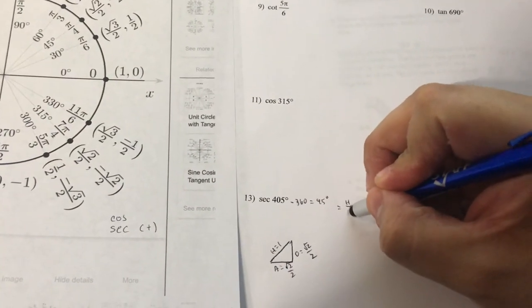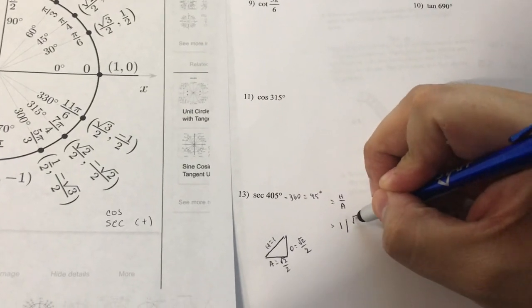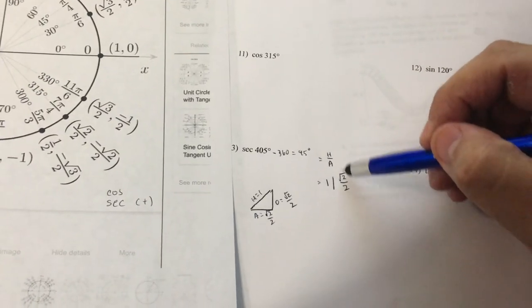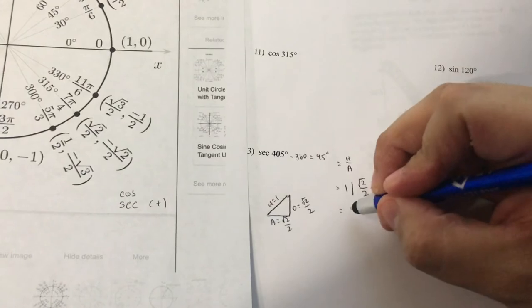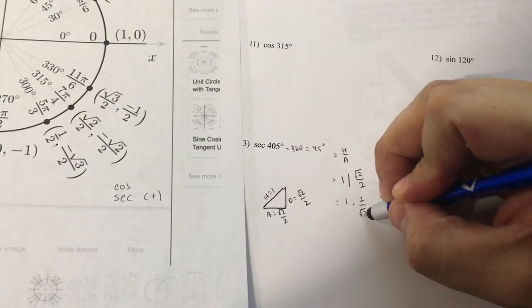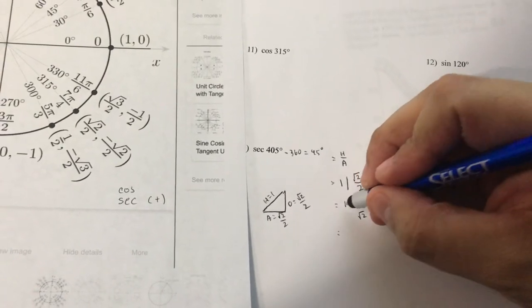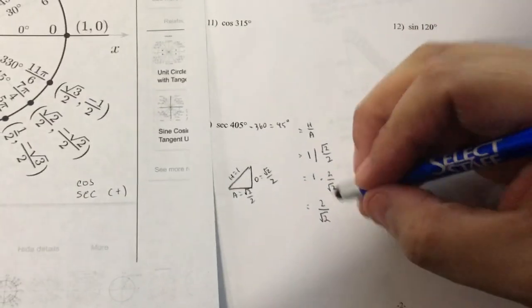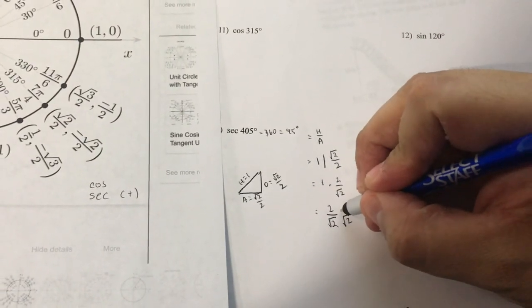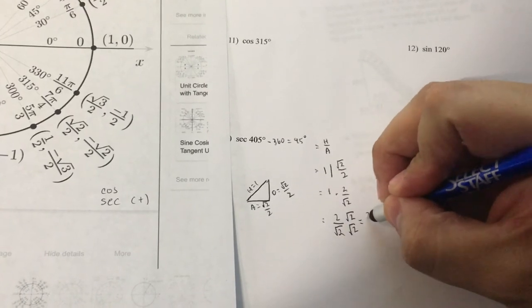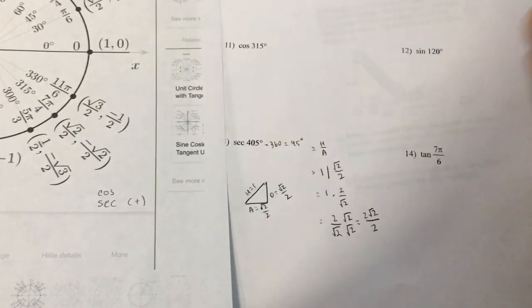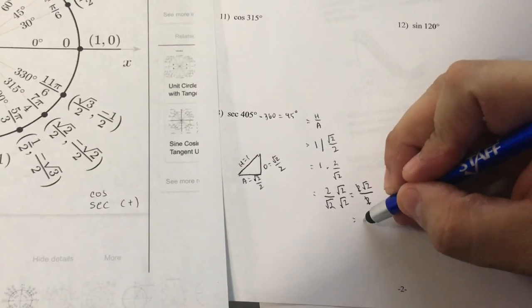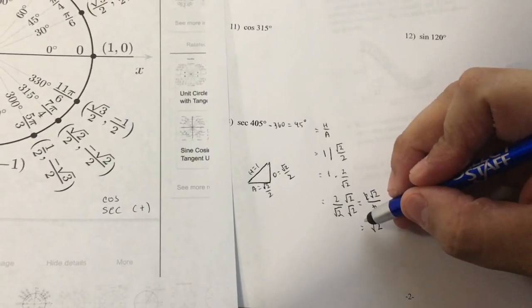Secant is equal to H over A, so the 1 divided by √2 over 2. Again here, I am dividing by a fraction, so I need to multiply by the reciprocal. So this 2 comes on top, √2 stays on bottom. So 1 times 2 is 2 on top, and on the bottom stays the √2. Now remember, I can't have square roots on the bottom, so I'm going to multiply by √2 over √2. So on the top I have 2√2, and on the bottom I just have a 2. Although this is correct guys, we can still reduce it. The 2s cancel each other, so final answer is √2.